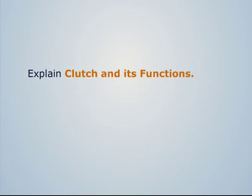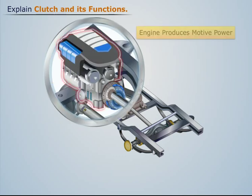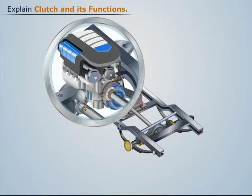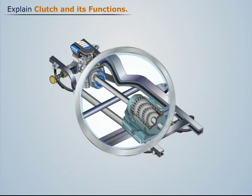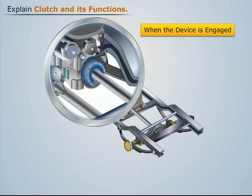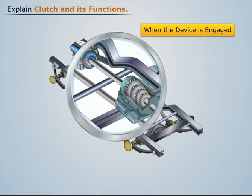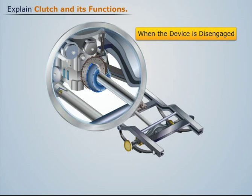In an automobile, the motive power produced by the engine is stored in a flywheel. This power needs to be transmitted to the gearbox according to the driver's requirement. To fulfill this need, a device is installed between the flywheel and the gearbox. When this device is engaged, the power from the engine gets transmitted to the gearbox; when it is disengaged, the power doesn't get transmitted and the vehicle stops while the engine keeps running.